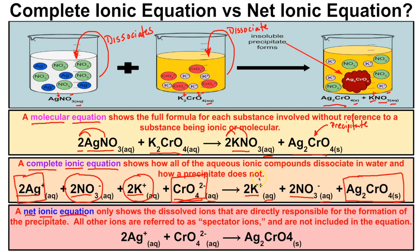All the other ions — the potassium ions and nitrate ions — are called spectator ions. They're just watching the chemical reaction take place from the side. Whatever appears identically on both the reactant and product sides are your spectator ions: two moles of NO₃⁻ and two moles of K⁺ on each side. The net ionic equation is therefore: two moles of Ag⁺(aq) reacting with one mole of CrO₄²⁻(aq) to produce silver chromate solid.